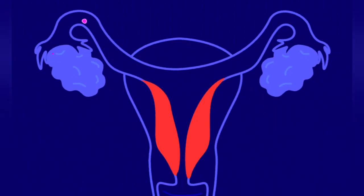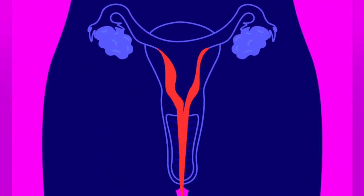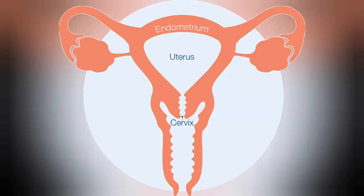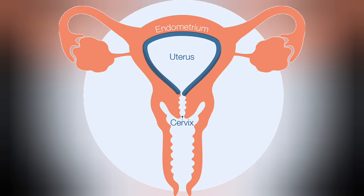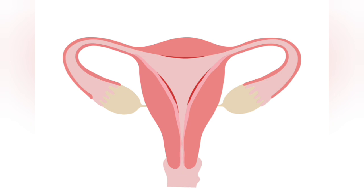Menstruation flow results due to breakdown of the endometrium lining the uterus, and its blood vessels, coming through the vagina. Menstruation only occurs if the released ovum is not fertilized. During pregnancy, all events of the menstruation cycle stop and there is no menstruation. In absence of fertilization, the corpus luteum degenerates, causing disintegration of the endometrium, leading to menstruation.